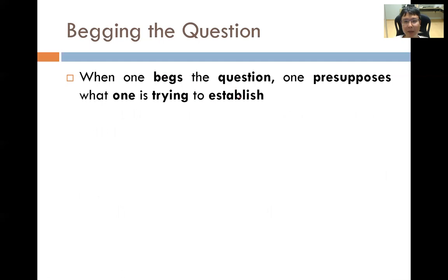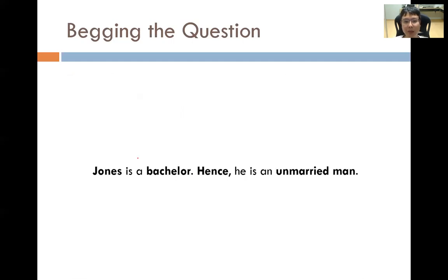Begging the question: when one begs the question, one presupposes what one is trying to establish — you have already embedded the conclusion into your argument, so of course you will get the conclusion you want. For example: you want to argue that Jones is an unmarried man, so you say 'Jones is a bachelor, therefore he is an unmarried man.' In some sense, this is saying nothing at all, because it is very obvious that if the premise is true the conclusion must be true. It is like trying to draw a square by saying every side is 90 degrees and every side is equal.